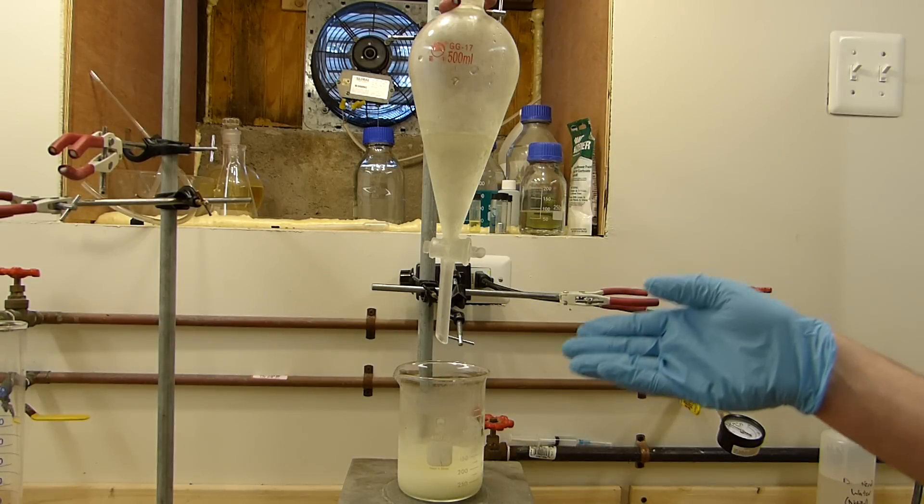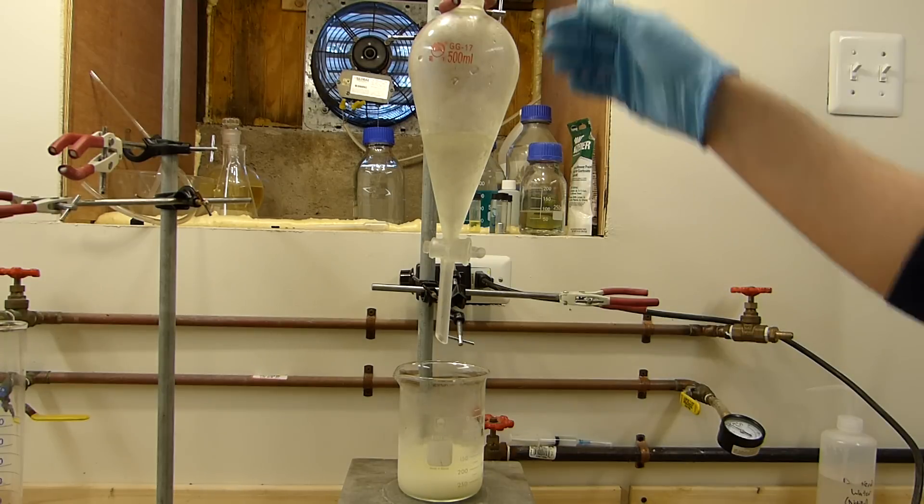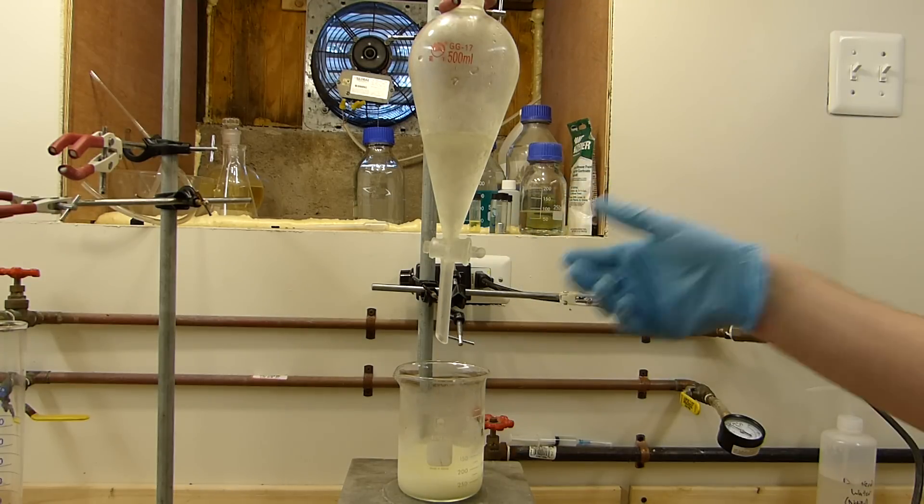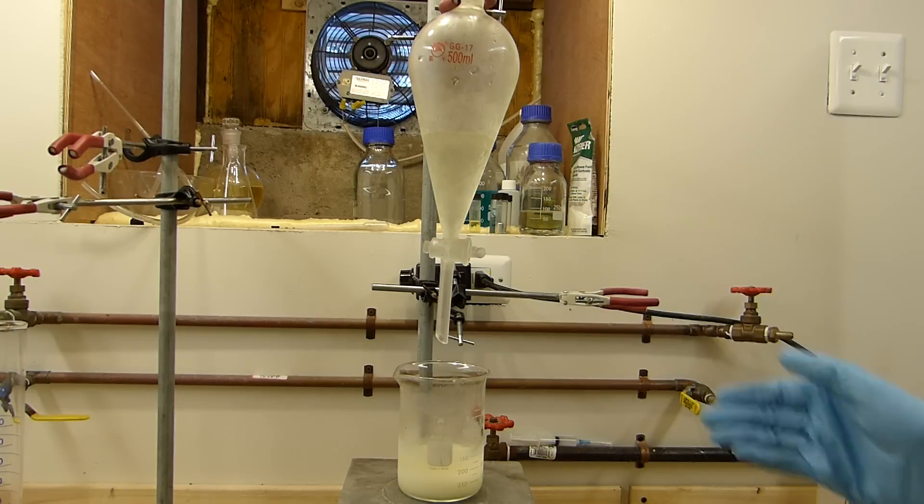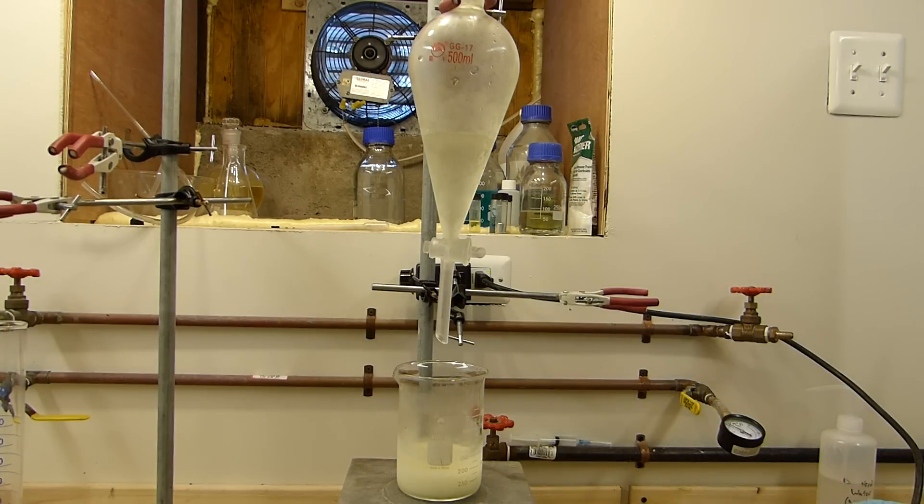So I've set up the reactants out of the freezer. I've removed the stopper, or at least engaged the vent at the top of the addition funnel to allow me to equalize the pressure so I can add the HCl without pressure problems. And we'll add it to a rapidly stirred beaker here of the alcohol and nitrite and we should end up with isopropyl nitrite.